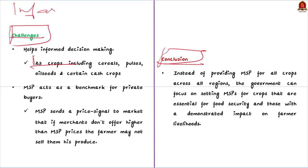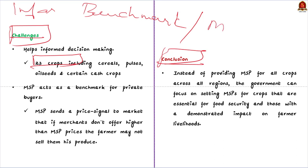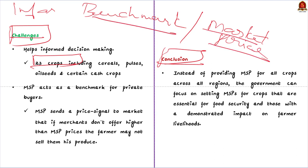Fourthly, it helps in informed decision-making — the government announces MSP before the cropping season for 23 crops including cereals, pulses, oilseeds, and certain cash crops, helping farmers decide which crop to grow for maximum economic benefit. Fifthly, MSP acts as a benchmark for private buyers — it sends a price signal to the market that if merchants don't offer a higher price than MSP, farmers may not sell to them, acting as an anchor for the agro-commodity market.